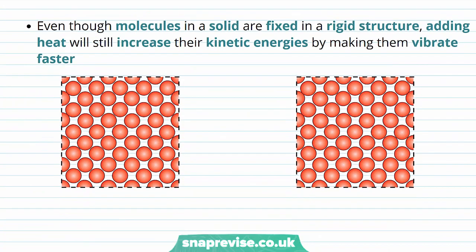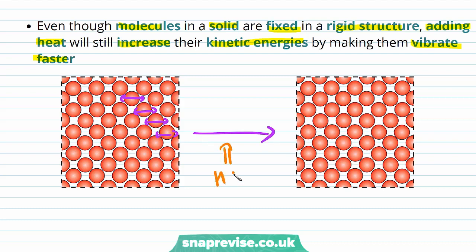Even though molecules in a solid are fixed in a rigid structure, adding heat will still increase their kinetic energies by making them vibrate faster. The molecules in a solid are fixed in a lattice and can only move by vibration. If we heat a solid, the kinetic energy of the molecules will increase because they vibrate faster.